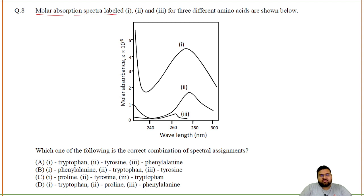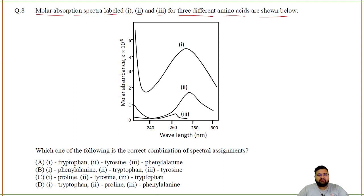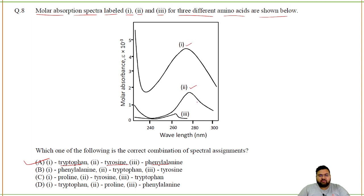Molar absorption spectra labeled 1, 2, 3 for three different amino acids are shown. These are aromatic amino acids: tryptophan, tyrosine, and phenylalanine — each showing their absorption maximum at different wavelengths. Tryptophan absorbs at the longest wavelength, and phenylalanine shows absorption around 270 nm. So the order 1, 2, 3 corresponds to tryptophan, tyrosine, and phenylalanine.